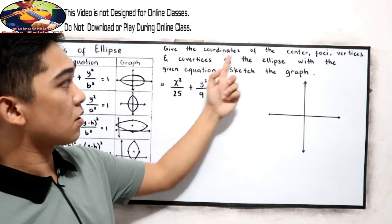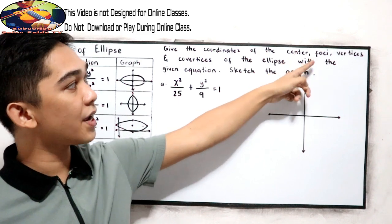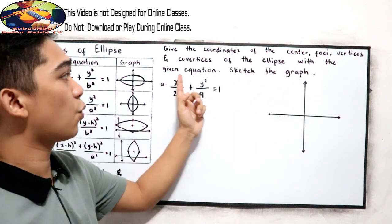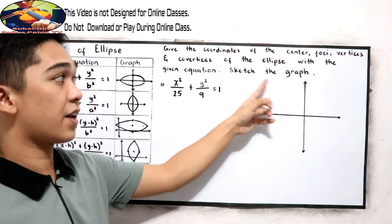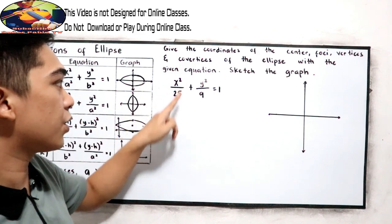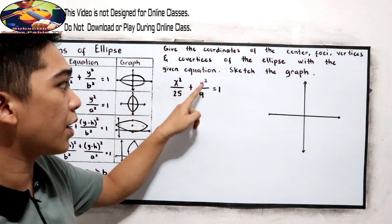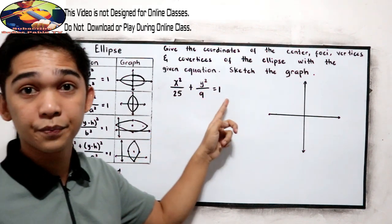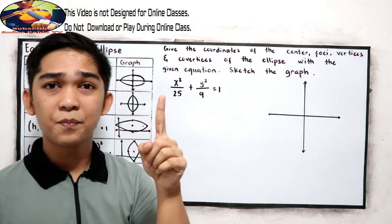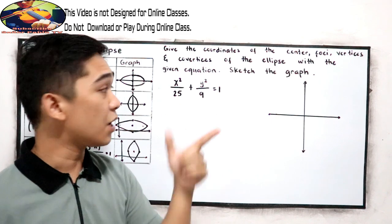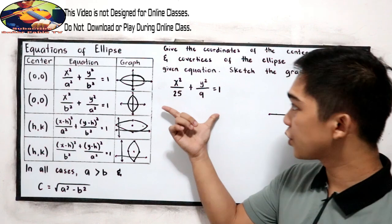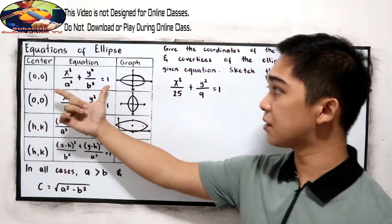Give the coordinates of the center, foci, vertices, and co-vertices of the ellipse with the given equation, and sketch the graph. Our equation is x squared over 25 plus y squared over 9 is equal to 1. First step: determine the form of the equation of our ellipse.